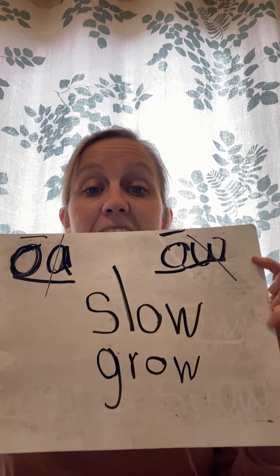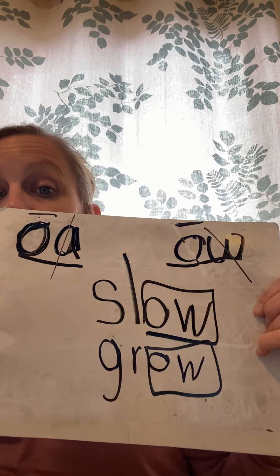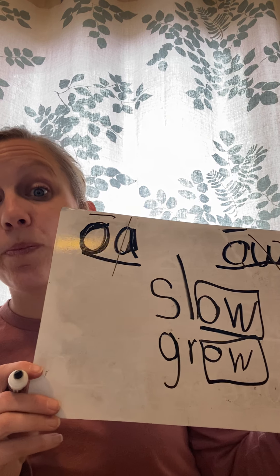I have the word slow, and I have the word grow. Remember, rhyming words have the same word family, and the word family starts with the vowel. They both have the OW word family. So slow and grow rhyme — they have the same ending.